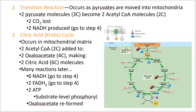Some books include the transitional phase with the citric acid cycle, but I personally separate them. Step two is the transition reaction. It occurs as the pyruvates are moved into the mitochondria — the sites of aerobic cellular respiration. Two pyruvate molecules with three carbons each become two acetyl CoA molecules with two carbons each, so each one has lost a carbon.